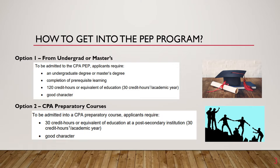The second method of entering the CPA PEP program is for people who have not completed an undergraduate degree or master's program majoring in accounting. CPA provides preparatory courses, which are individual accounting courses for students who have not completed specific accounting courses. To be eligible to enroll in the preparatory courses, you need to have 30 credit hours or equivalent of education at a post-secondary institution, and this does not have to be from accounting or business-related courses.